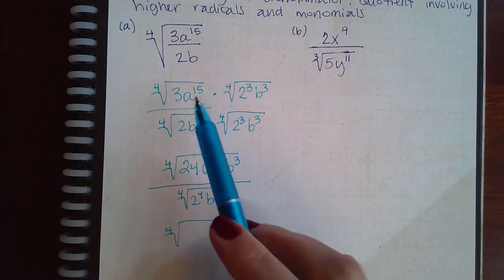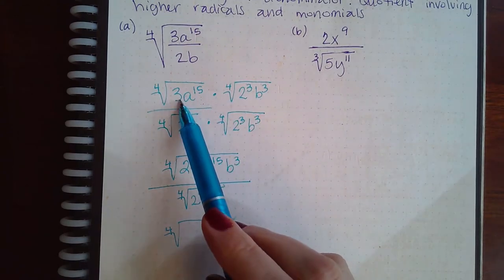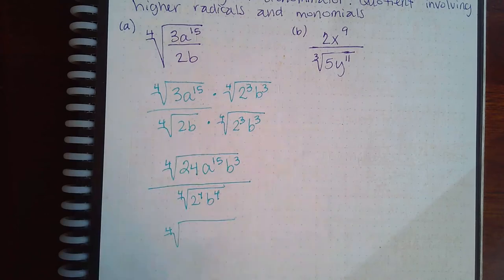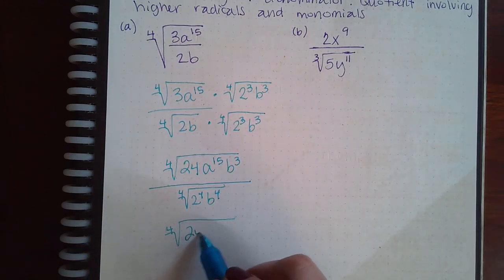Why? Because it's made up of 3 2s and 1 3. That's not enough for a fourth to come out. So that 24 is going to stay put.